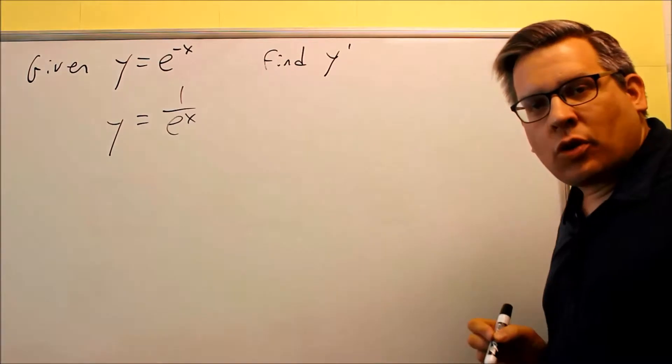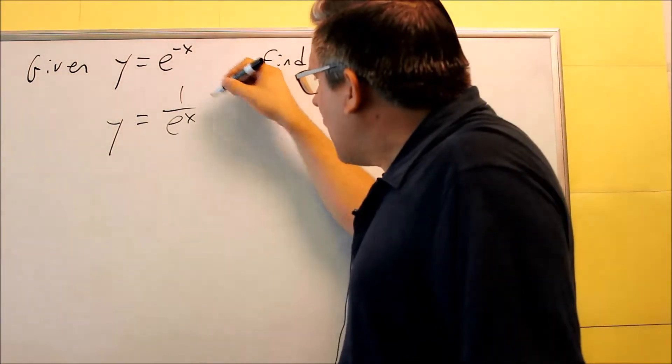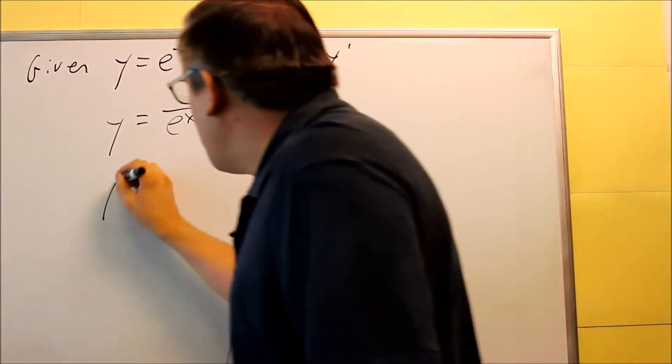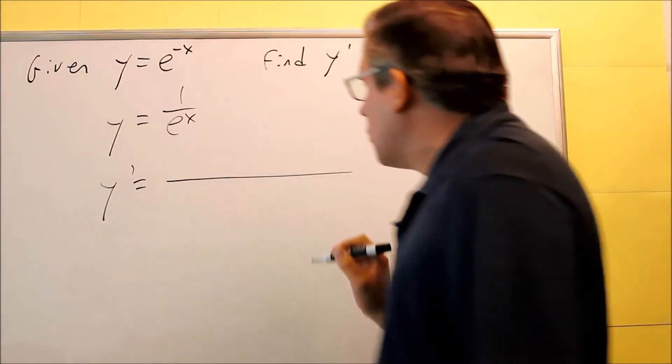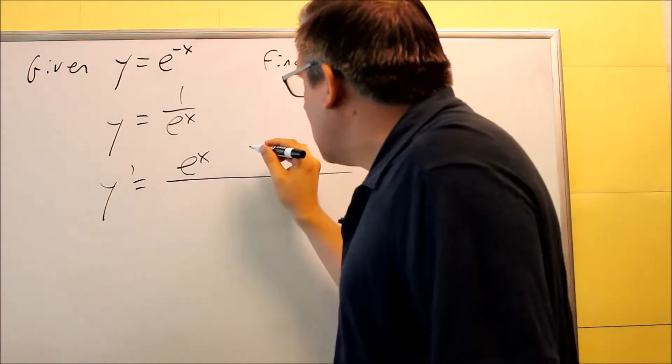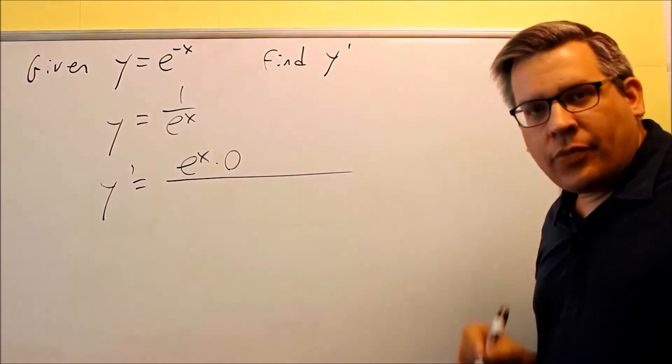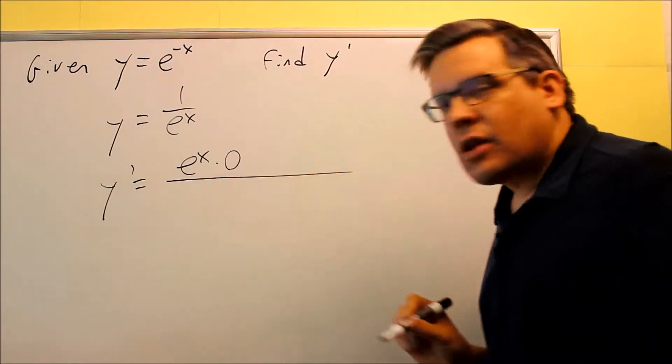We have a fraction, so we're going to do this by the quotient rule. Okay, so the top one is f, the bottom one is g. When we find the derivative, we're going to use quotient rule. So the way the rule works, it's the bottom, e to the x, times the derivative of the top. Now on the top, we have a 1. Derivative of 1 would be 0.